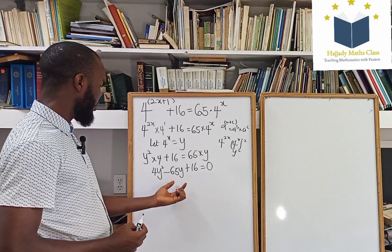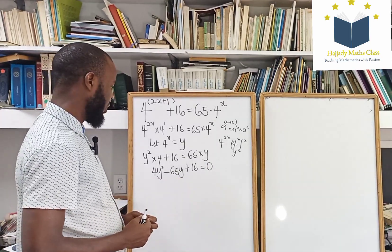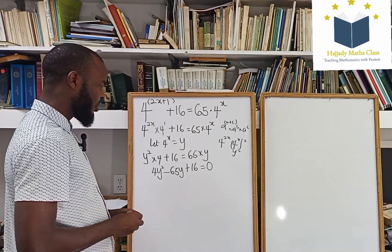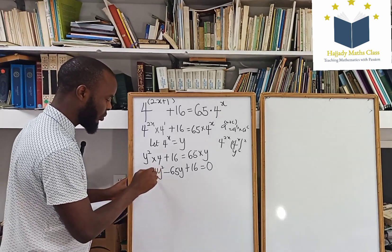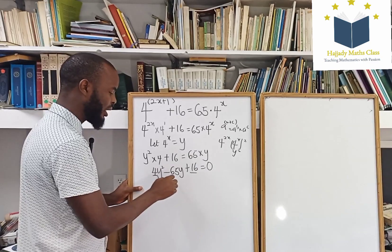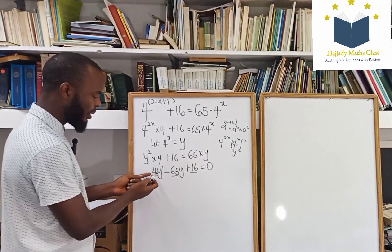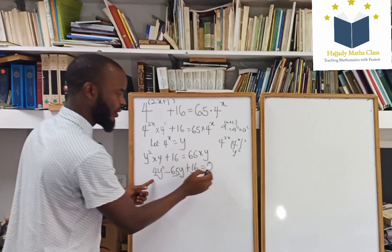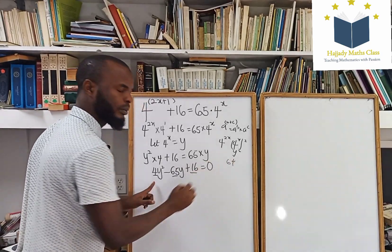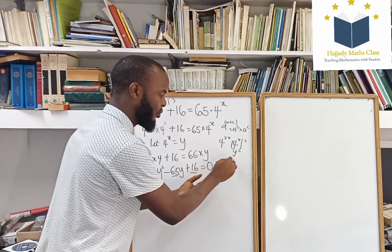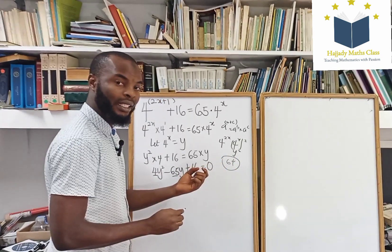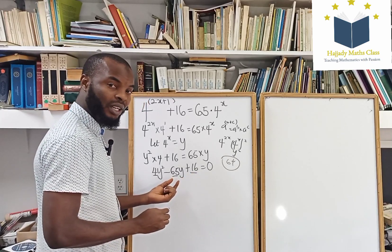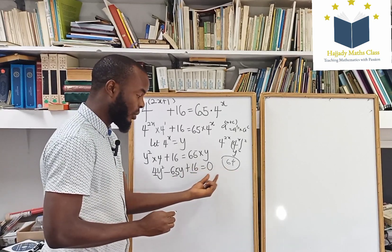Looking at this, this is a quadratic equation. Solving this further, I need two factors such that when the two factors are multiplied together, it gives me the product of this, and when added together, I get this. The y squared has a coefficient of 4, so multiply the coefficient 4 with the constant 16 — you're going to have 64. What are the two factors of 64 such that when added together I get negative 65, and when multiplied together I get positive 64?